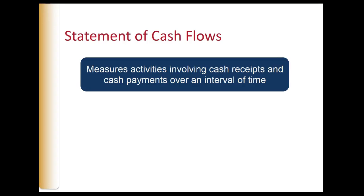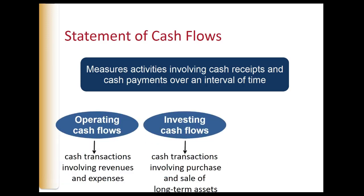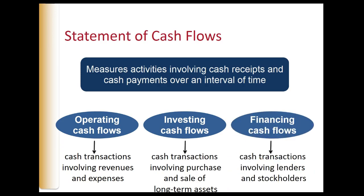We're going to continue on with this chapter and talk about a financial statement called the statement of cash flows. This statement measures activities involving our cash receipts and cash disbursements or payments over a period of time. We classify all cash transactions into three specific categories that correspond to business activities: operating activities, investing activities, and financing activities.